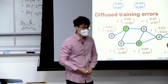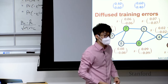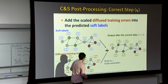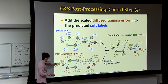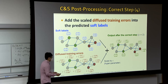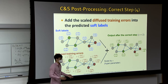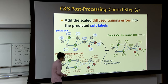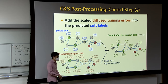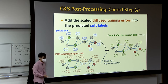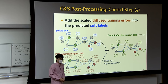A student asks about using this for graph classification with potentially noisy node features during training. While direct error propagation doesn't apply, you could diffuse or update node features within training graphs — similar to the label propagation idea but propagating features instead of labels.